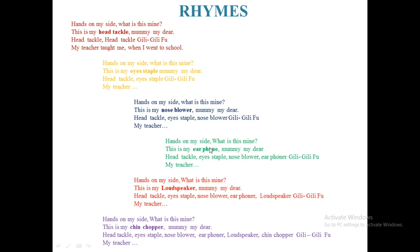Hands on my side, what is this mine? This is my earphone — 'mommy my dear head tackle eye staple, gilly gilly poop, my teacher taught me when I went to school.' Hands on my side, what is this mine? This is my loudspeaker — 'mommy my dear head tackle, eye staple, nose blower, earphone, loudspeaker, gilly gilly poop, my teacher taught me when I went to school.' Like this way you will learn these rhymes. Okay children.